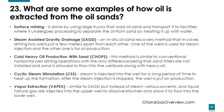What are some examples of how oil is extracted from the oil sands? Surface mining is done using large trucks that load oil sand and transport it to facilities where it undergoes processing to separate the oil from the sand by heating it with water. Steam Assisted Gravity Drainage, or SAGD, is an in-situ oil sand recovery method that involves drilling two wells just a few meters apart. One well is used for steam injection and the other for oil production. Cold Heavy Oil Production with Sand, or CHOPS, is similar to conventional horizontal well drilling, with the only difference being that sand filters are not installed and sand is allowed to flow into the wellbore along with the heavy oil.